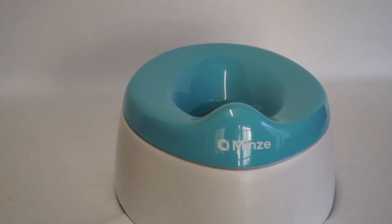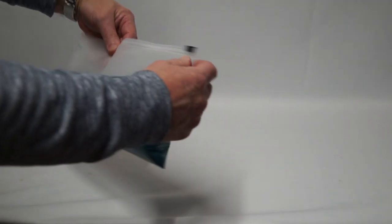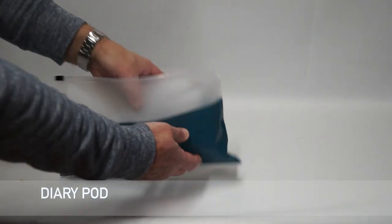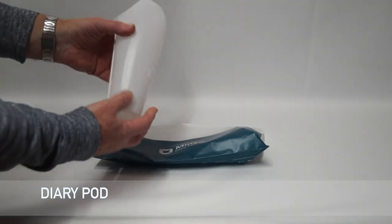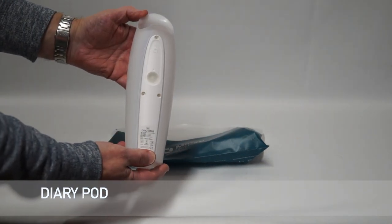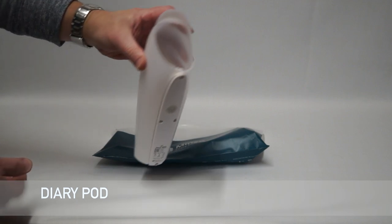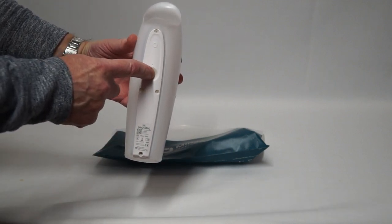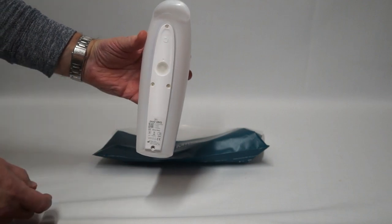For clinicians who want their patient to create a diary of events, the diary pod is used. This can be used by both men and women and toilet-trained children, and it will record the time and volume of urine that is passed. It works in conjunction with the MINS app that can be downloaded onto a smartphone.